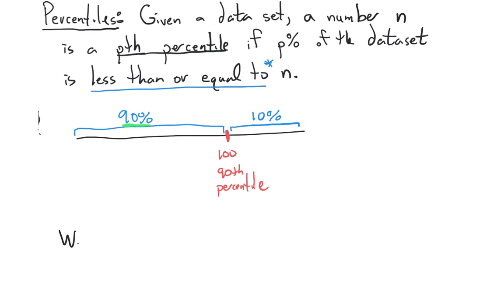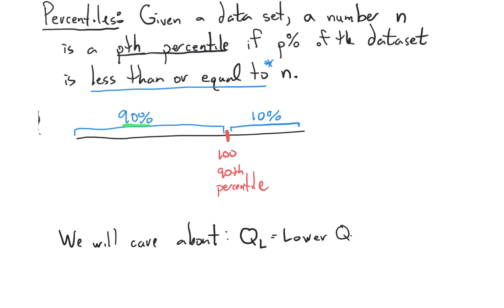The ones we're going to care about are the following. We're going to call it the lower quartile — and you might notice quartile has the word 'quarter' in it, so we're dividing things into fours. The lower quartile is the 25th percentile.